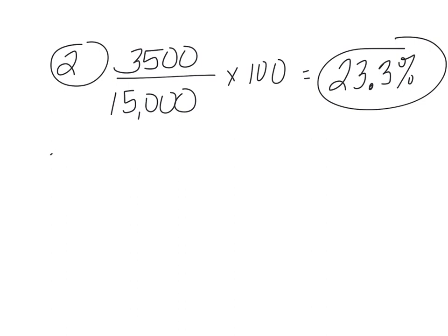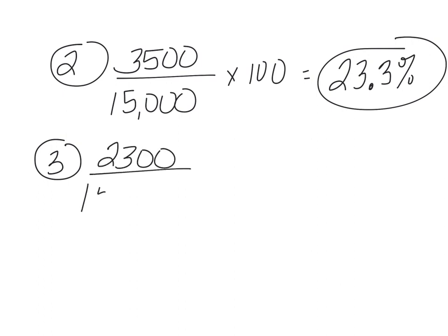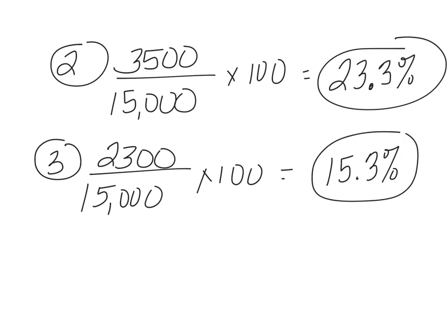Number three: the death rate. Goal deaths are 2,300 each year over total population, times 100. Pause the video while you do the calculation. Our answer comes out as 15.3333... repeating, so we round to three significant digits: 15.3%.